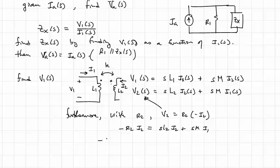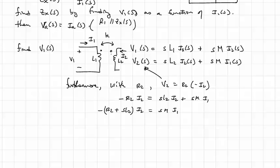And you can collect terms. And we can have minus R2 plus SL2 times I2 is equal to SM I1. And very quickly here, we can get to the expression for I2, which is equal to minus SM over R2 plus SL2, the whole thing, times I1.